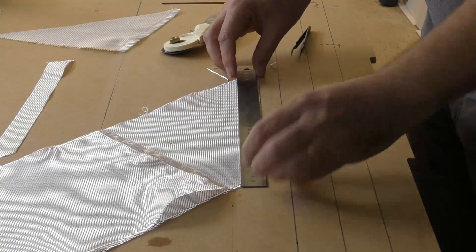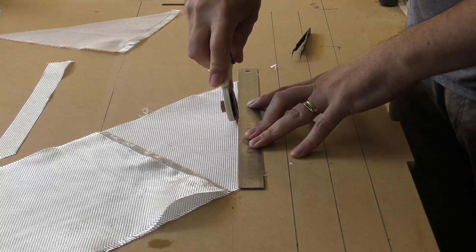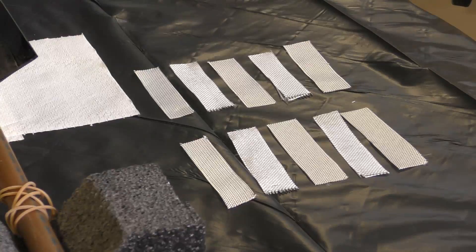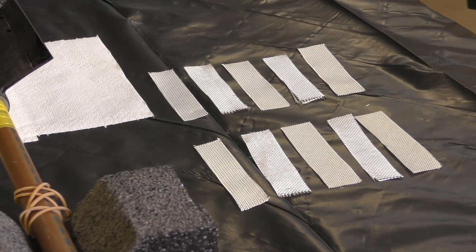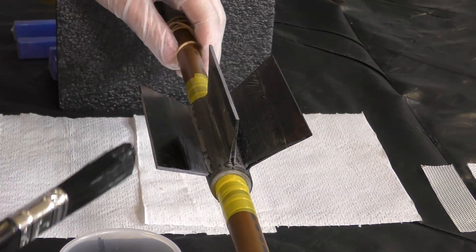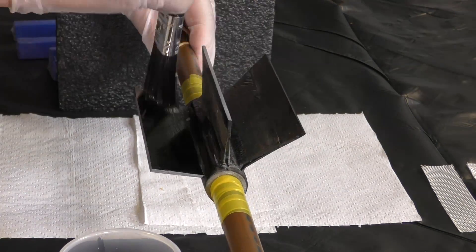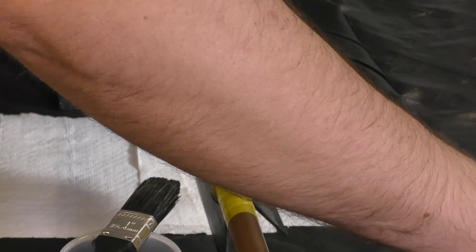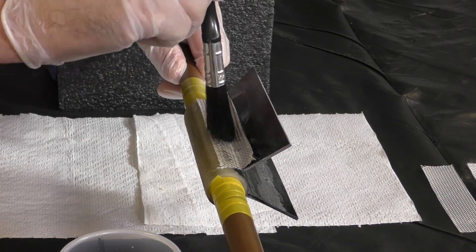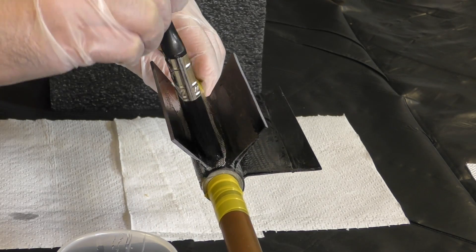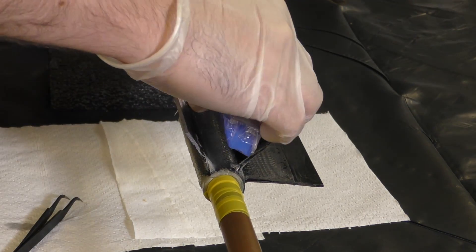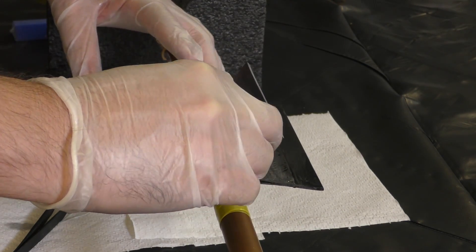We then need to reinforce that joint with five layers of 200 gsm fiberglass. We opted not to use carbon fiber here because it's a lot harder to get it to conform to the sharp edges. The fiberglass is plenty strong for our purposes. Each of the layers alternates between 0 and 90 degrees orientation and a bias cut cloth for extra rigidity.